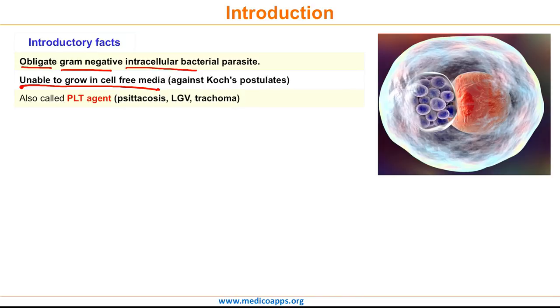Chlamydia is also called the PLT agent because it causes three diseases: Psittacosis, LGV, and Trachoma.